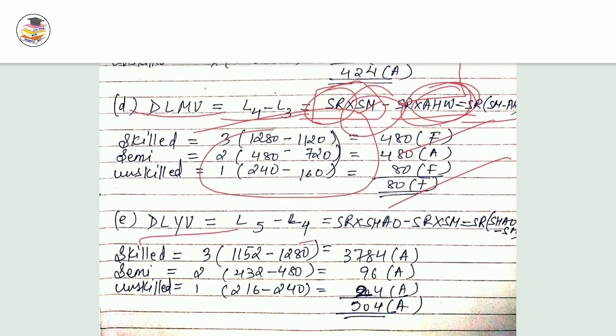Yield variance: SR into SH minus SR into SM. Apply the formula and calculate the values.